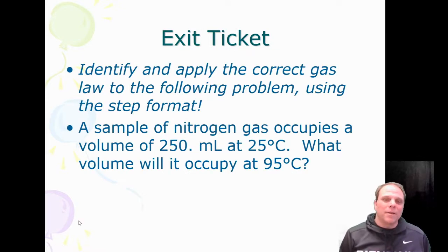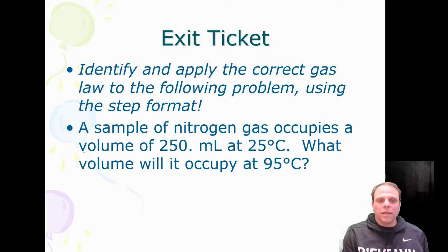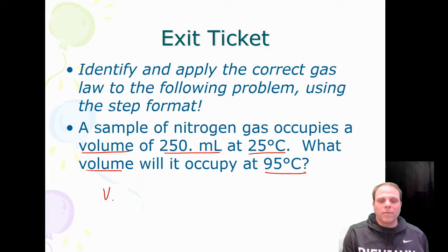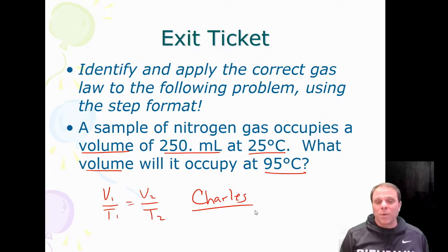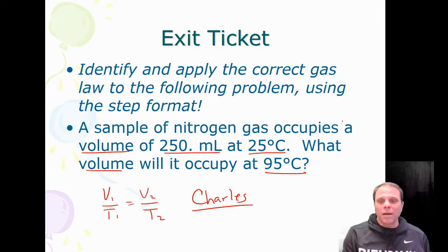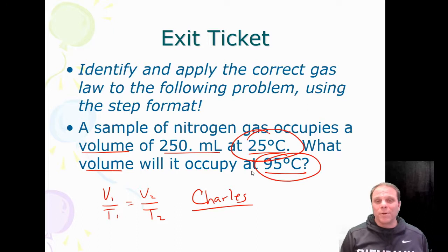To identify which gas law to apply: look at what variables you've been given. If you've been given volume and temperature, that's Charles's Law — the one dealing with volume and temperature. Once you've identified the law, you can solve for the unknown. And don't forget to convert Celsius to Kelvin before doing the calculation — that is your key.